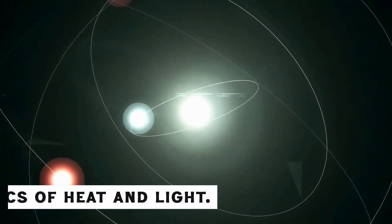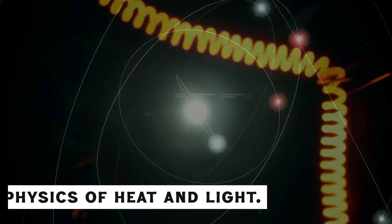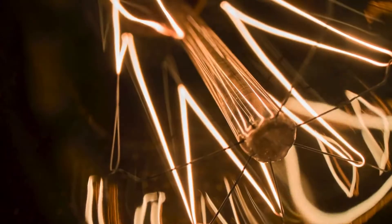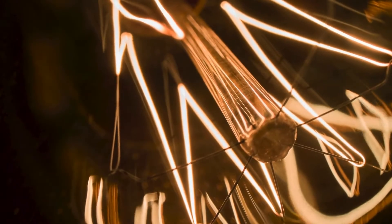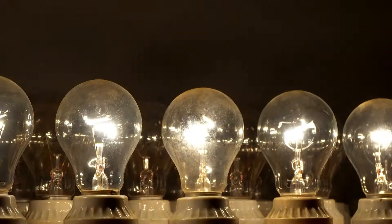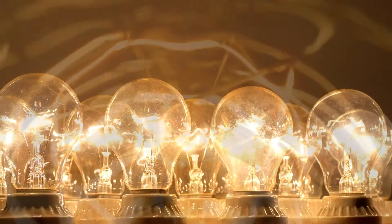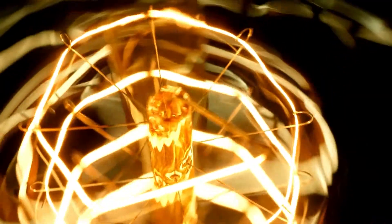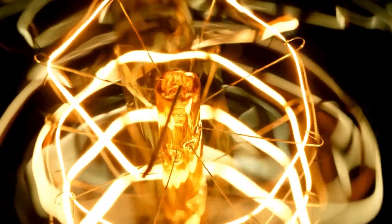But why does this happen? It's all about the physics of heat and light. When the filament gets hot, the atoms in the tungsten start to vibrate. These vibrations create energy, and this energy is what we see as light. It's like the filament is dancing with excitement and producing light as a result.